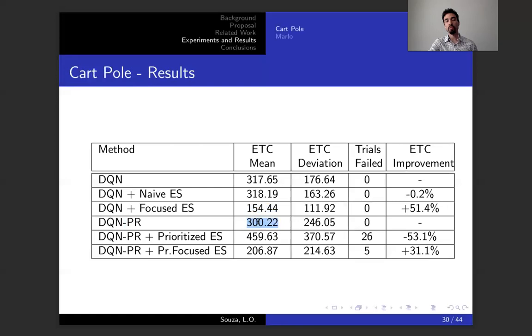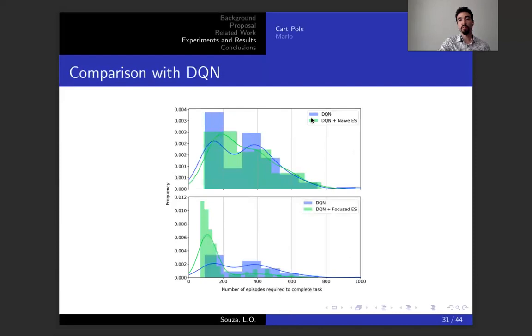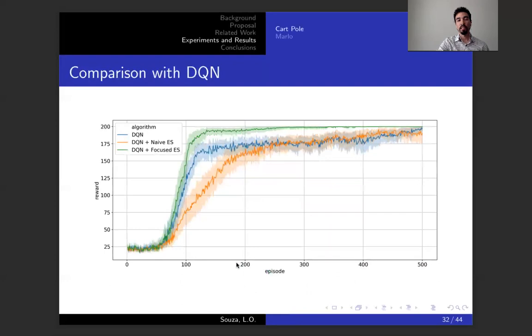We also look at the prioritized replay. Prioritized replay in this classical control doesn't do a lot better than DQN. If you add the prioritized approach, it actually hurts. But when you add the focus, it again improves over the baseline. You can see here in graphs, the blue histogram is DQN and the green is naive experience sharing. They're almost the same. But the focus experience sharing is significantly different than the DQN. In the paper, we also have p-values for our KS test.